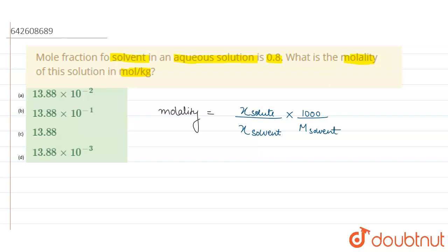Now we know that the mole fraction of solvent is 0.8, and the mole fraction of solute plus the mole fraction of solvent is always equal to 1. The total mole fraction is always equal to 1, and the mole fraction of solvent is 0.8. So the mole fraction of solute is 1 minus 0.8, which is equal to 0.2.